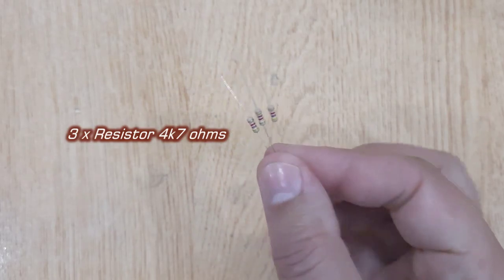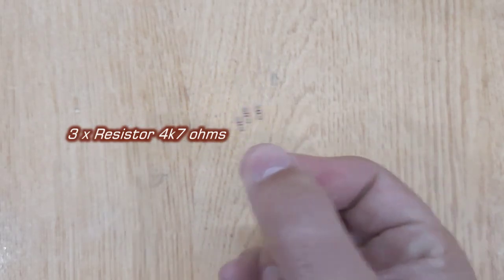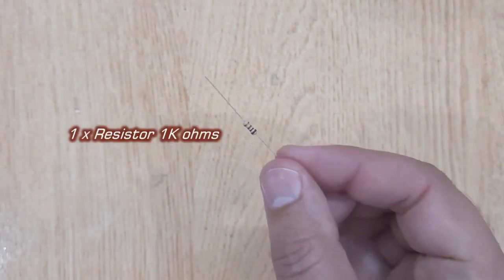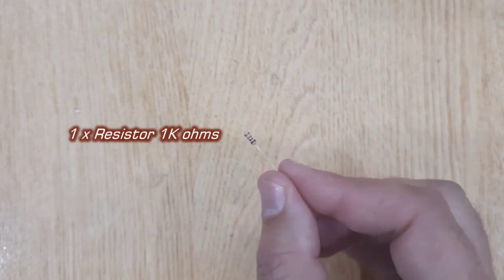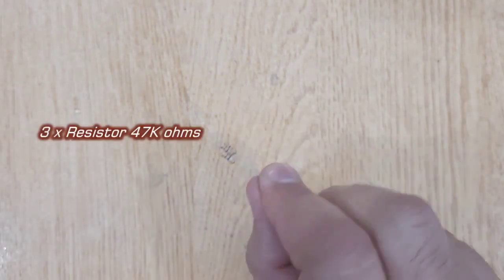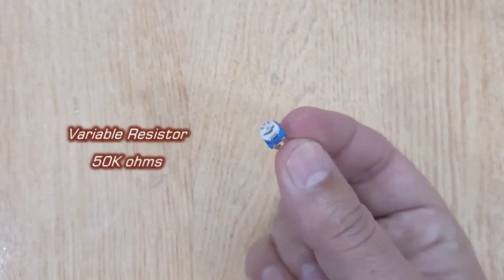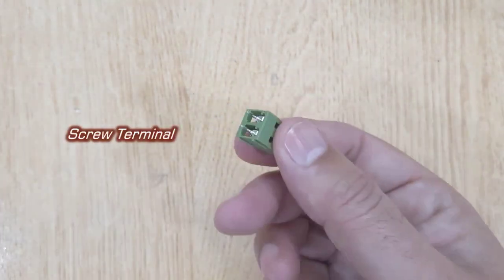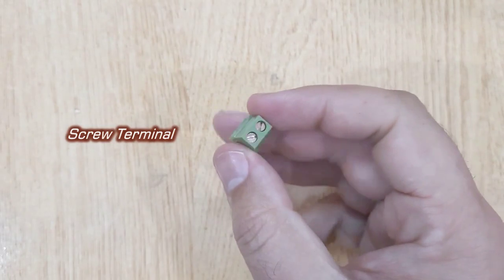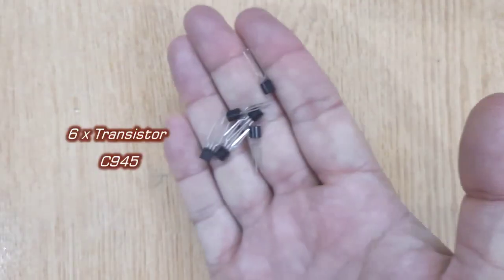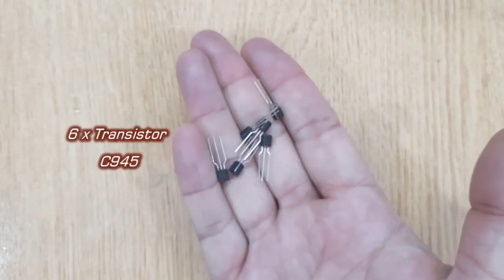Resistor 4K7 Ohms 3 pieces, Resistor 1K Ohms, Resistor 47K Ohms 3 pieces, Variable resistor 50K Ohms, Screw Terminal, and transistor C945 or C946, 6 pieces.